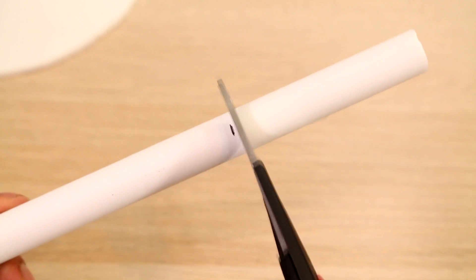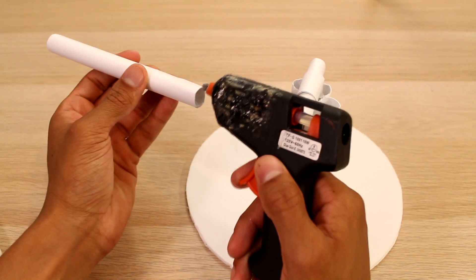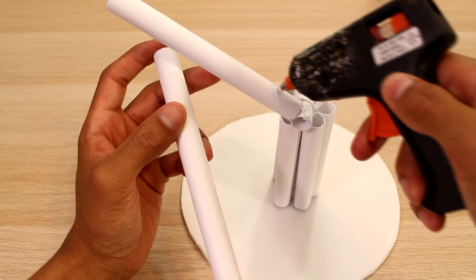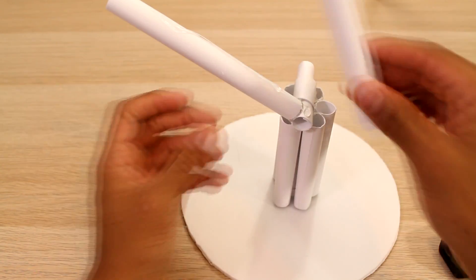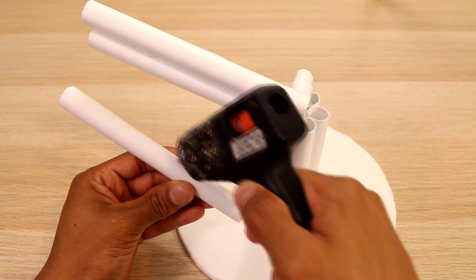Now we're going to measure out a few pieces for the actual arm of our robotic arm. And I'm going to add some glue to that and glue it onto the rotating piece that we have here.